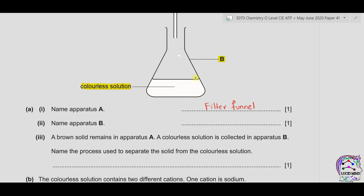Apparatus B is the conical flask — you can also write Erlenmeyer flask. A brown solid remains in apparatus A and a colorless solution is collected in apparatus B. The process used to separate the solid from the colorless solution, where the filter funnel is used, is called filtration.